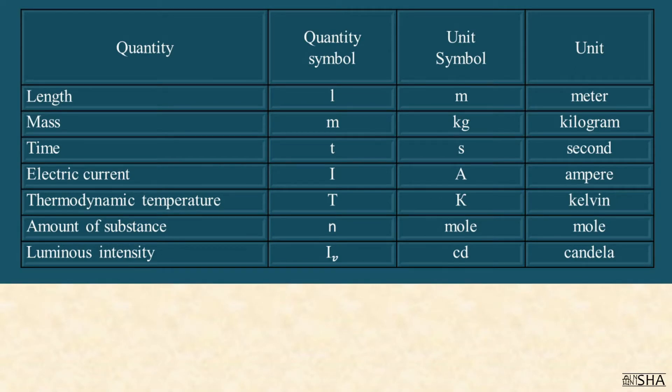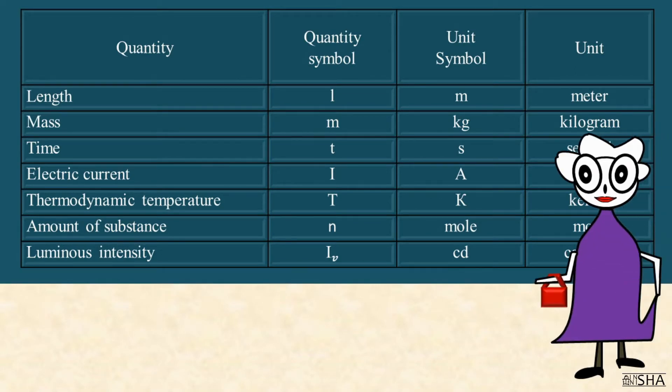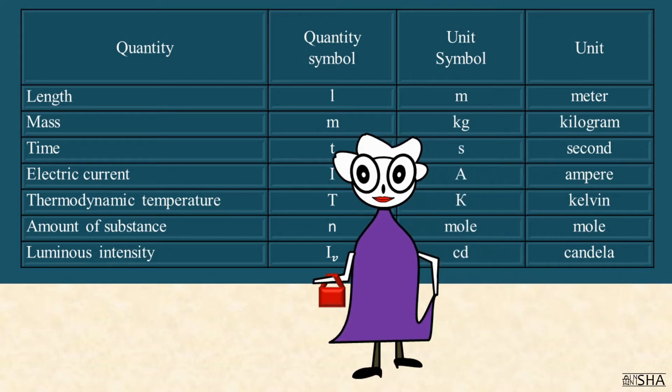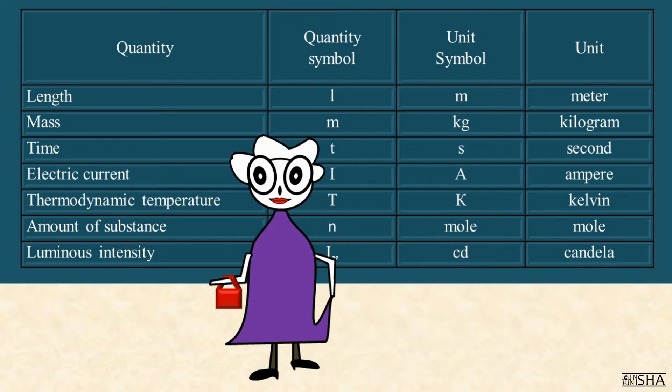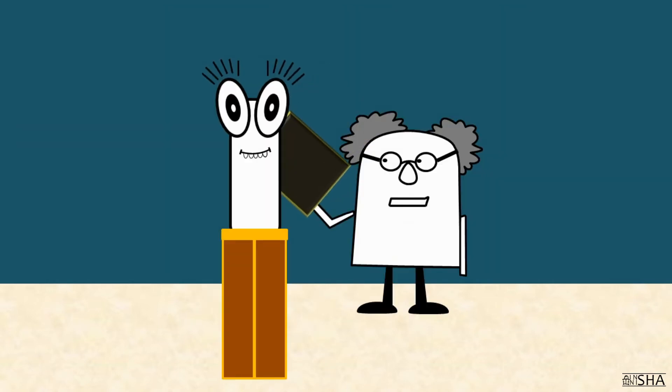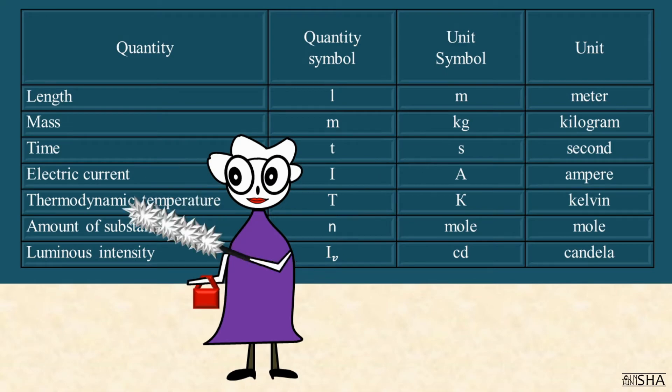If you have watched the first episode of this course, then you should probably remember this table. It contains units of physical quantities that are used in the SI system. Look at her, she thinks she's a queen or something like that, doesn't she? Other units of measurement are obtained by adding prefixes that we've shown you in this table.